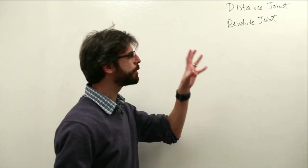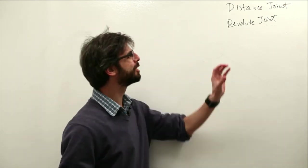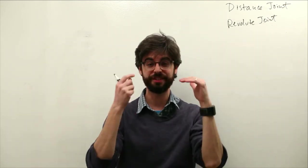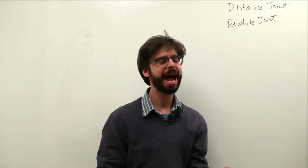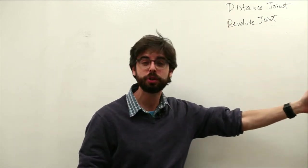But I think what's going to be most useful is to look at these two joints. What is the process for defining and creating a joint? How does a distance joint work? How does a revolute joint work?